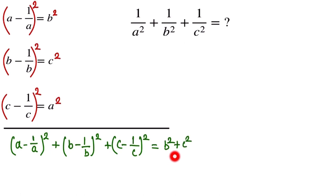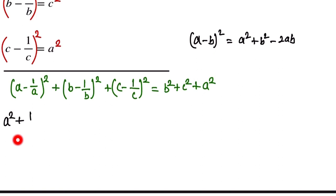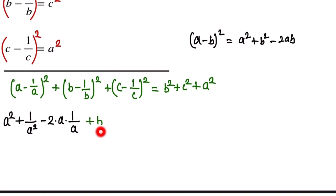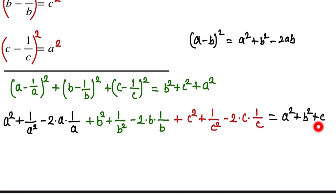We expand each term using the identity (a − b)² = a² + b² − 2ab. This gives us: a² + 1/a² − 2·a·(1/a), plus b² + 1/b² − 2·b·(1/b), plus c² + 1/c² − 2·c·(1/c), all equal to a² + b² + c².